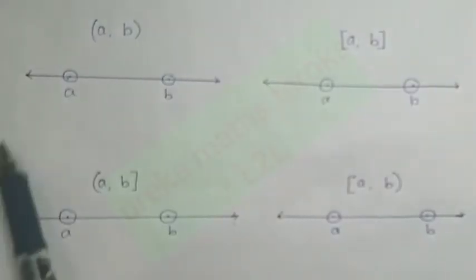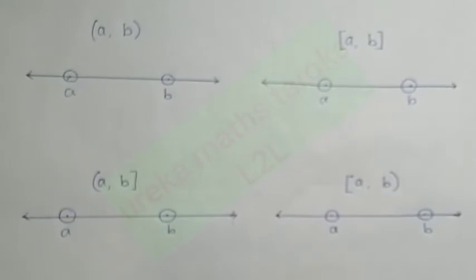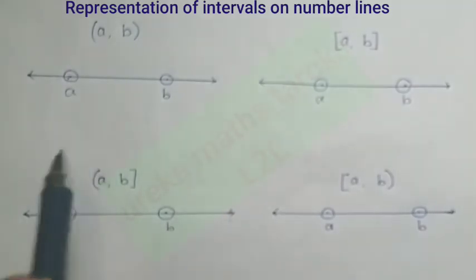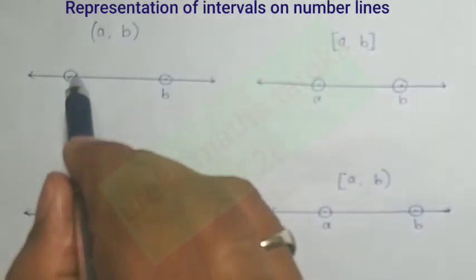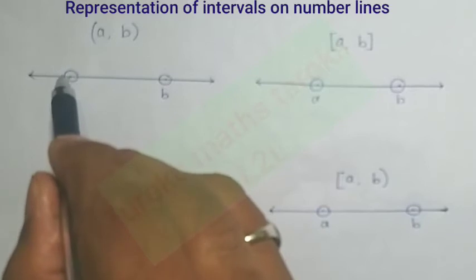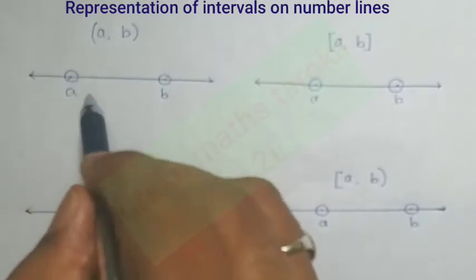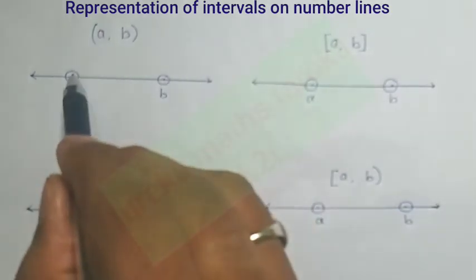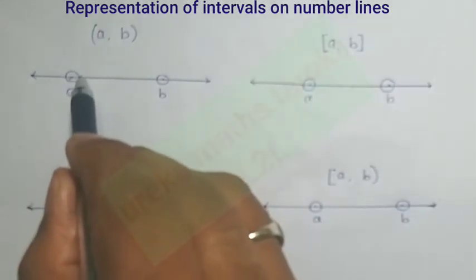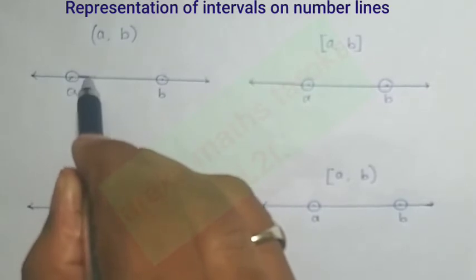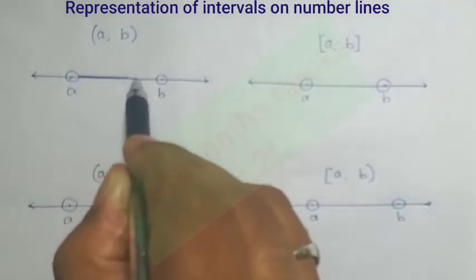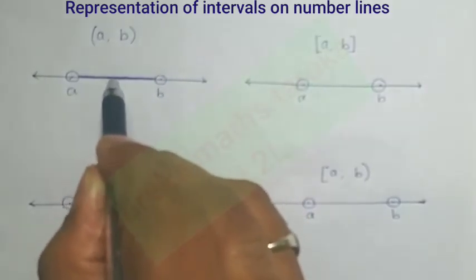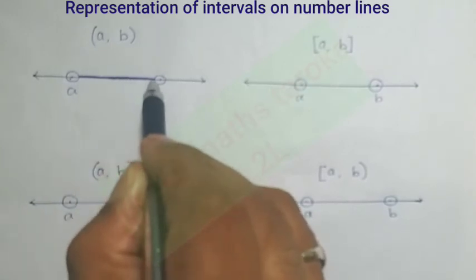Now let's observe how to express these intervals on a number line. For an open interval on the number line, we use open circles to indicate that the endpoints are not included.